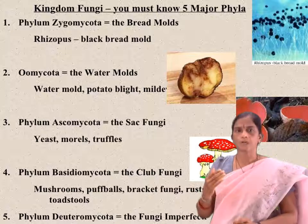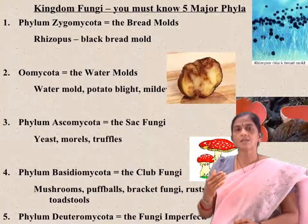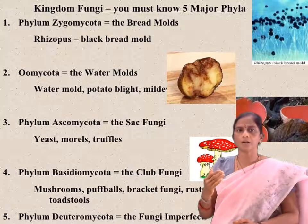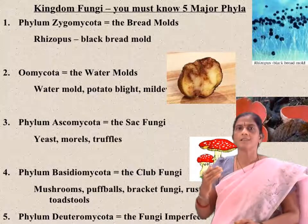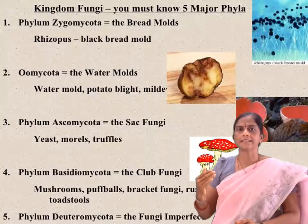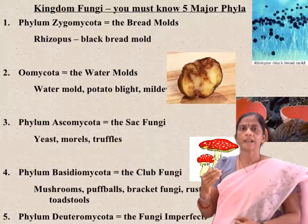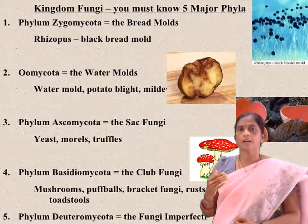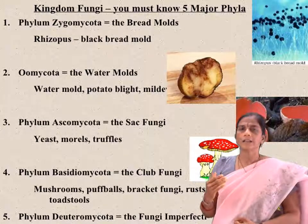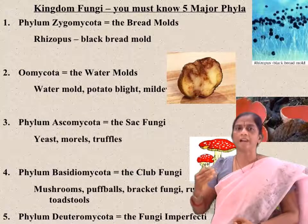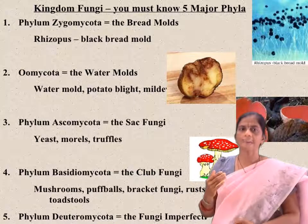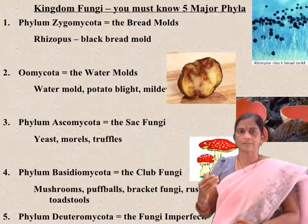Oomycota is called water mold — it causes potato blight disease. Phylum Ascomycota is known as sac fungi; examples include yeast and truffles.